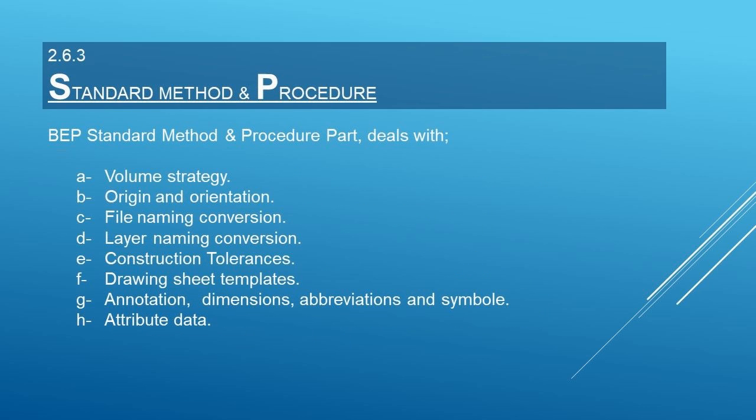The BIM Execution Plan also deals with standard methods and procedures, such as volume strategy, origin and orientation, file naming conventions, layer naming conventions, construction tolerances, drawing sheet templates, annotations, dimensions, abbreviations, symbols, and attribute data.